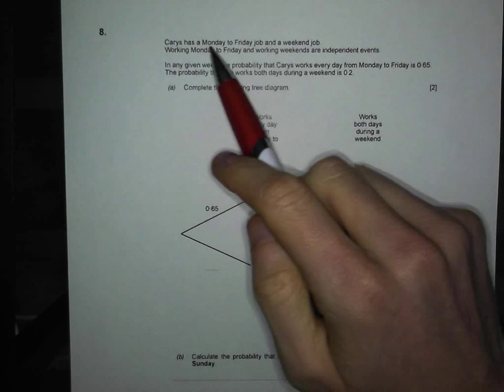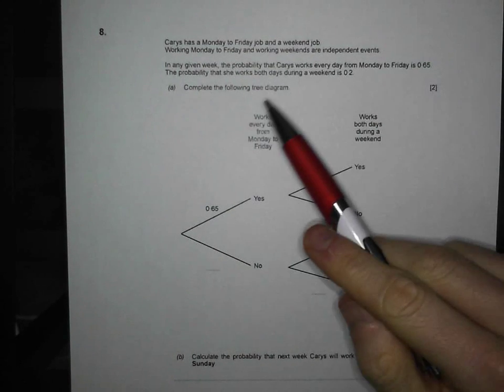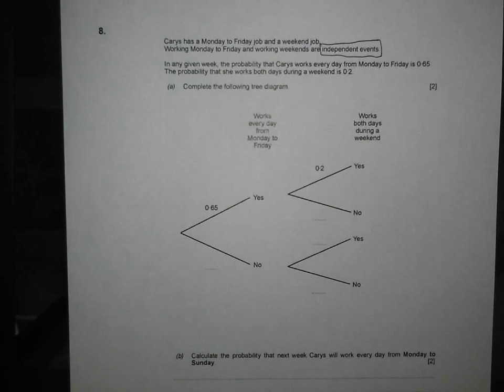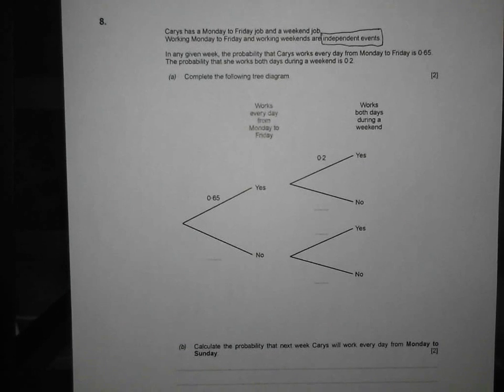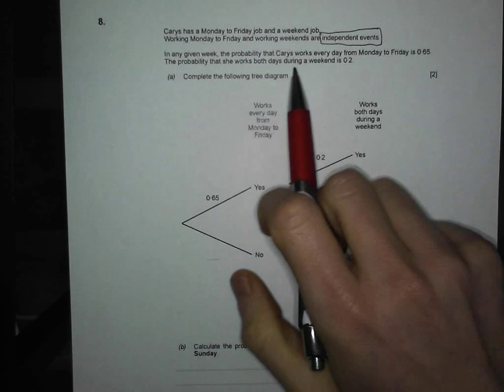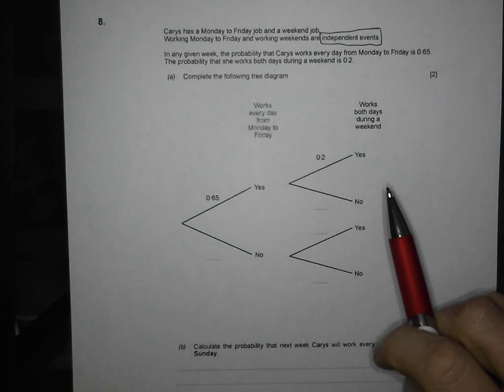Keris has a Monday to Friday job and a weekend job. Working Monday to Friday and working weekends are independent, no impact on each other whatsoever. In any given week, the probability Keris works every day from Monday to Friday is 0.65. The probability that she works both days during a weekend is 0.2.